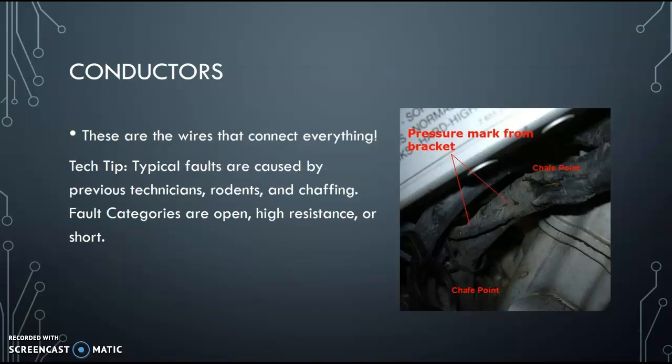And the conductors. These are the wires that connect everything. Here's some typical faults. If you look at the picture here, some pressure marks and some chafing, some rubbing. You'll see this on factory vehicles, pretty common. Right here, this loom going down the transmission, looks like on this vehicle, there's some chafing going on right here. This can rub through inside, causing one of the basic fault categories right here, open, high resistance, or short. Okay, those are the main things we're looking at. And again, next week, we'll talk more about diagnosing these kind of faults.